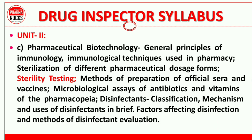Unit 2 remaining topics include pharmaceutical biotechnology: various principles of immunology, immunological techniques in pharmacy, sterilization, sterility testing, methods of preparation of official sera and vaccines, microbiological assay of antibiotics and vitamins. The disinfectants chapter is also important for the DI exam — study factors affecting disinfection and methods of disinfectant evaluation.